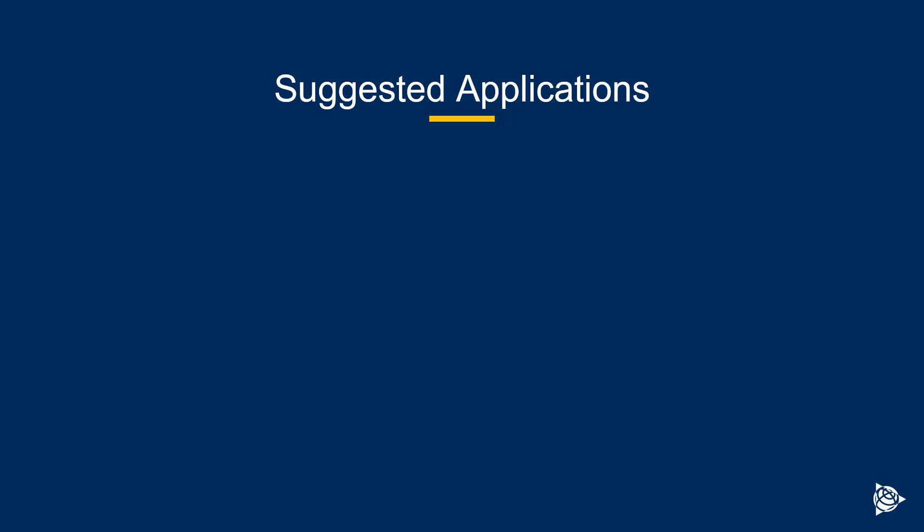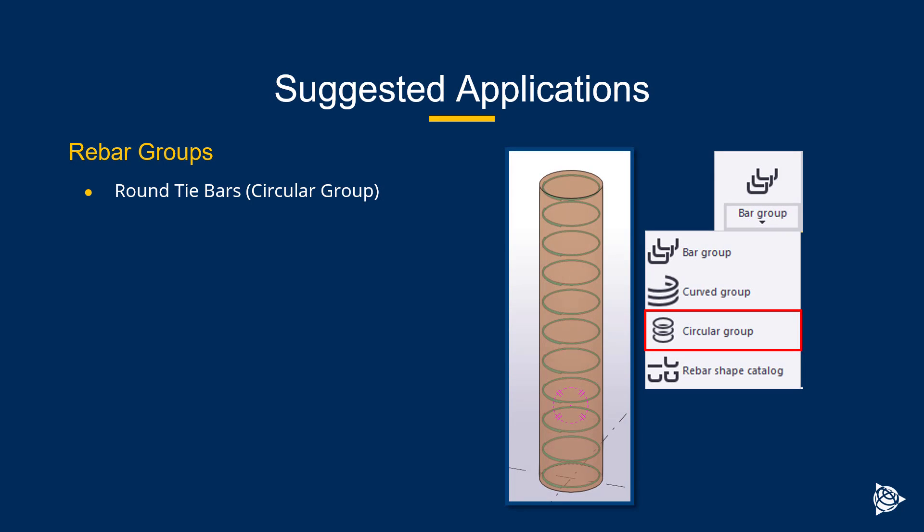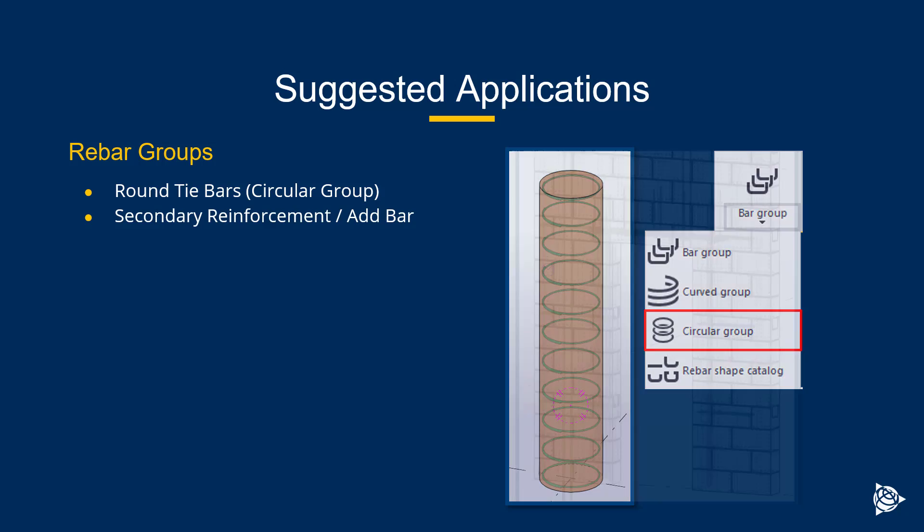A natural question that extends from talking about groups versus sets is: where should I use them? I have a few suggested applications, but by all means this is not a complete list. The first for rebar groups would be circular groups — it is really a great tool, so if you need to achieve that configuration, this is where you want to do it, outside of using other components to help you achieve your rebar configuration.